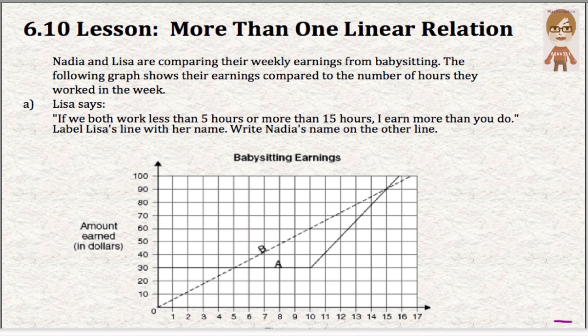So Lisa says, if we both work less than five hours or more than 15 hours, I earn more than you do. So what we need to do is look at the graph and figure out which line is Lisa and which one is Nadia. So I need to know, is the dotted line Lisa or is the solid line Lisa? Line A or line B?